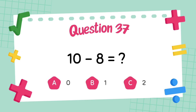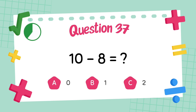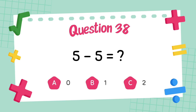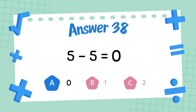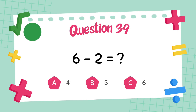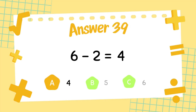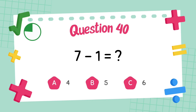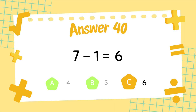What is 10 minus 8? The answer is 2. What is 5 minus 5? The answer is 0. What is 6 minus 2? The answer is 4. What is 7 minus 1? The answer is 6.